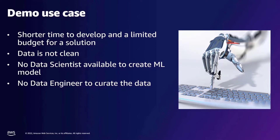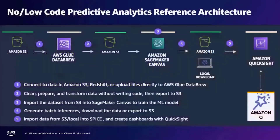Let's see how various AWS services can help you achieve that goal. Here is the reference architecture we'll be using. First, we'll have a data set in Amazon S3 and connect to it through DataBrew to curate, clean, prep, and transform the data without writing any code, then export it back to S3. From SageMaker Canvas, we import that data set, train the ML model, generate batch inferences, and export to S3 again. Then we import that data into Spice, which is part of QuickSight, create a dashboard, and create a topic on that data set utilizing Q.